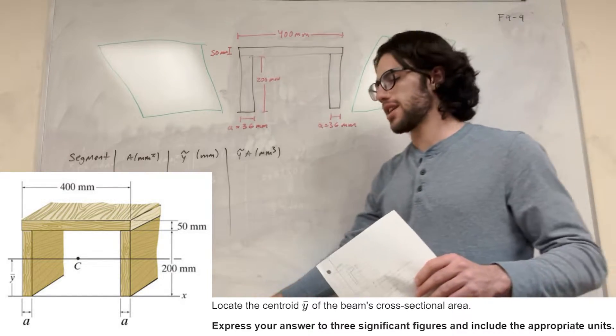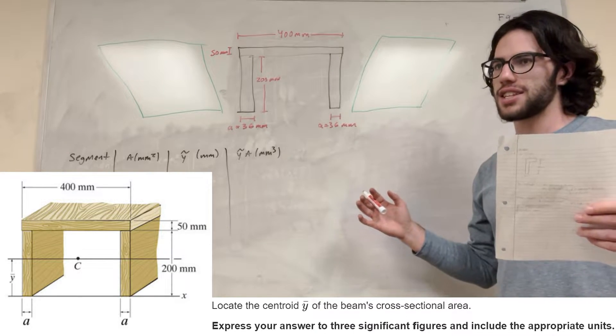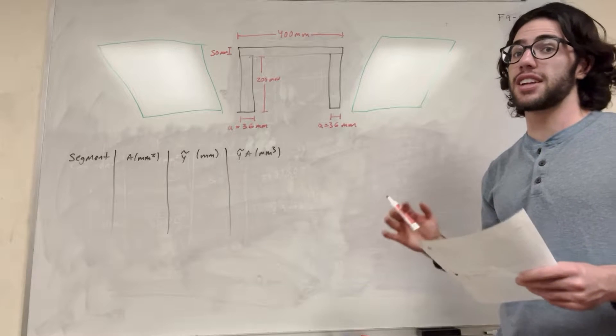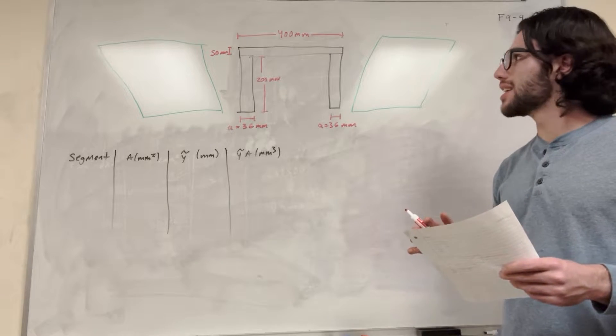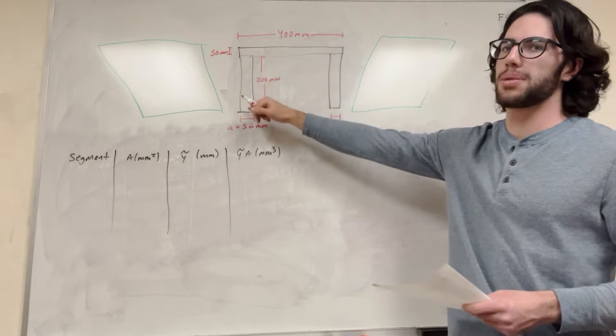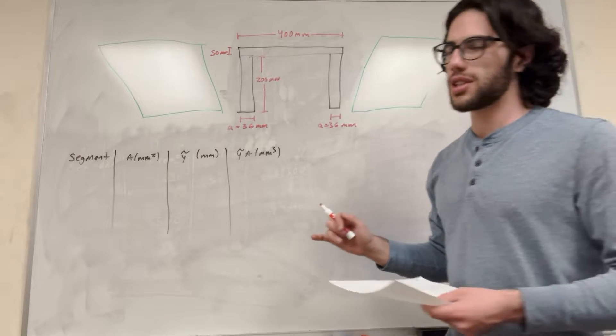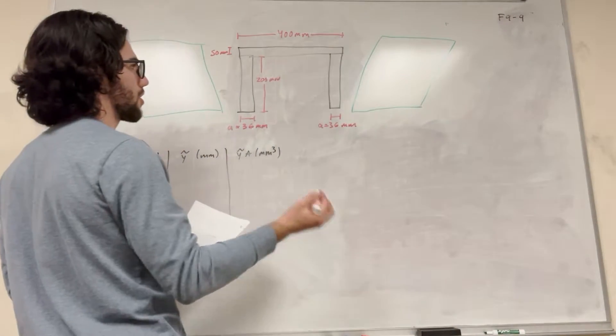So when you have a problem like this, we have a table here. You want to break it up into segments, and then you want to basically find the center mass of all those segments and find the center mass of all of that combined. So we want to break it up into segments that are going to be easy, because right now it's pretty complicated. So the segments that we want to break it up to is simple shapes. So the simplest shapes we can find here are three rectangles.